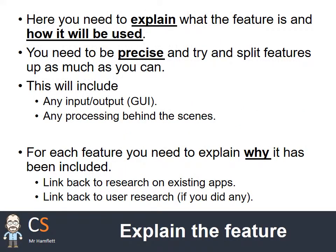Explaining the feature is easily overlooked because you need to clearly show what this feature is doing. It's not always obvious — you might feel it's obvious but it's not necessarily so to someone reading your coursework. You need to say what the feature is and how it's going to be used. Try to be as precise as you can and split it up as much as possible, as this will aid implementation and decomposition. It should include your user interface and the input/output, and all the processing behind the scenes.